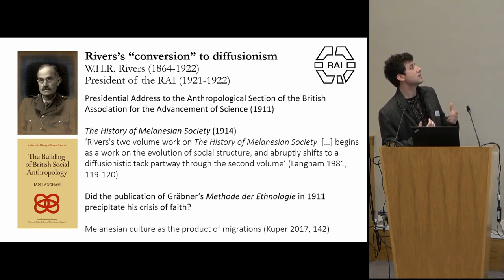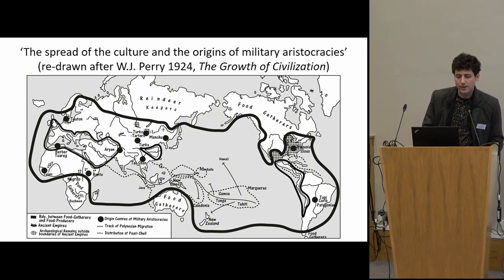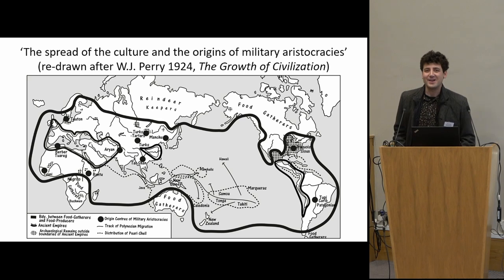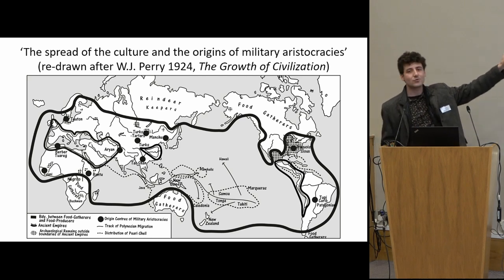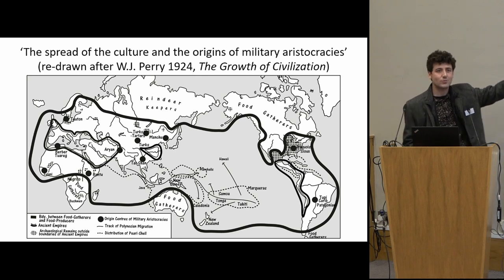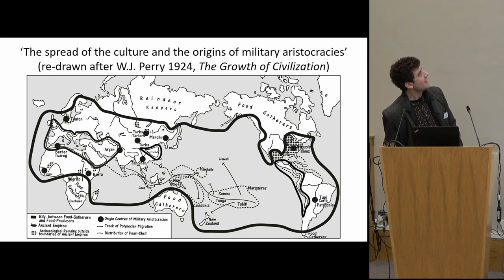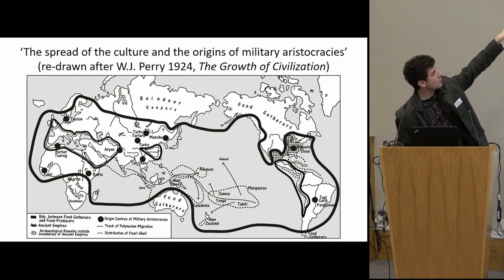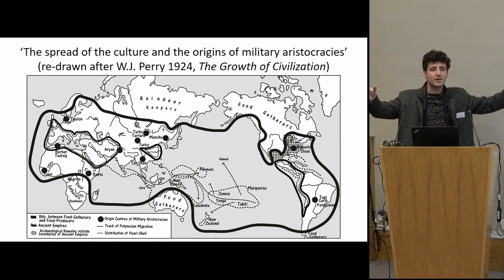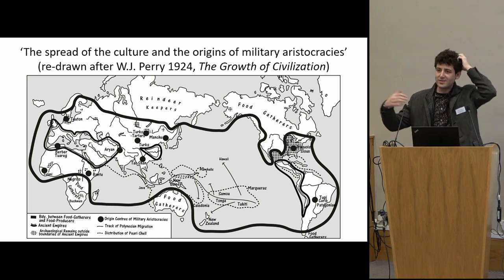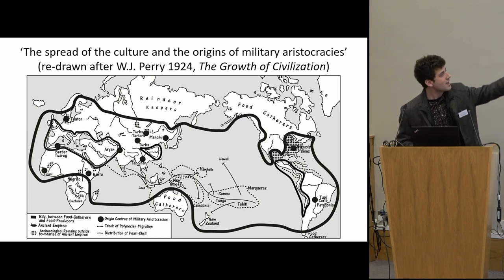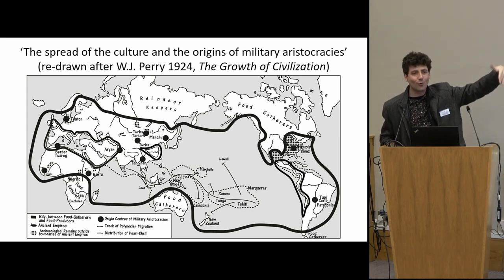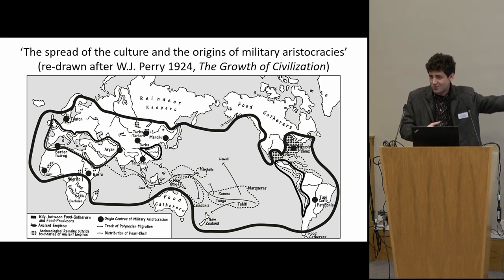Rivers died very early, in 1922, so he was not so involved in that development. It was later taken on by people like William Perry. I love this image from The Course of Civilization. Childe, by the way, was involved in the preparation of the second edition of that book — we know he was familiar with Perry's ideas and was working with Perry and Elliot Smith. Here you really see what Childe had in mind: early centers somewhere in the Mediterranean and Middle East, a worldwide dispersal of agriculture and food producers, with neat boundaries between food gatherers and food producers. The entire continent of Australia is shown as all food gatherers.